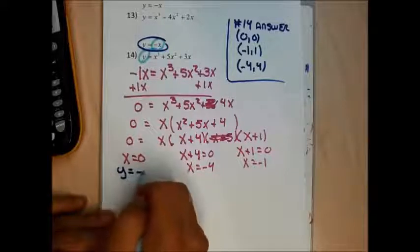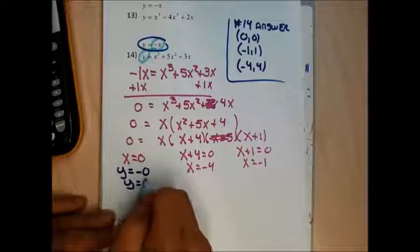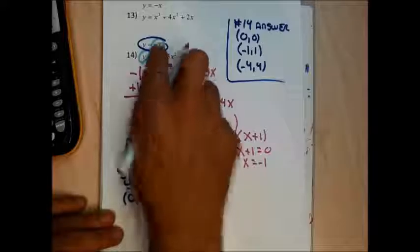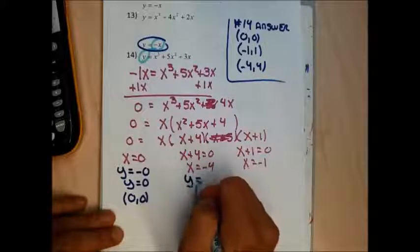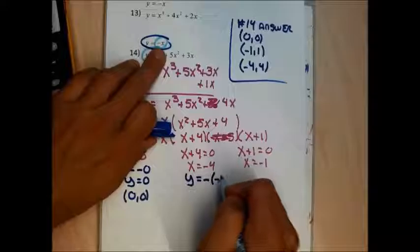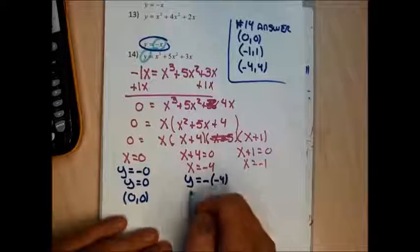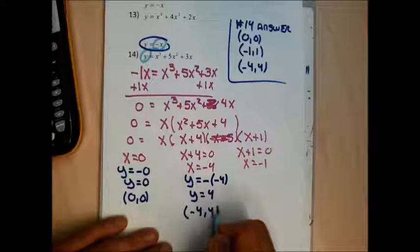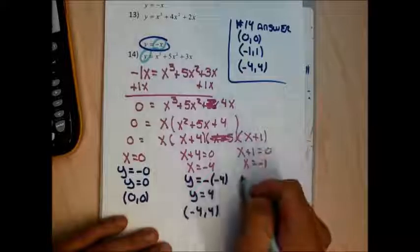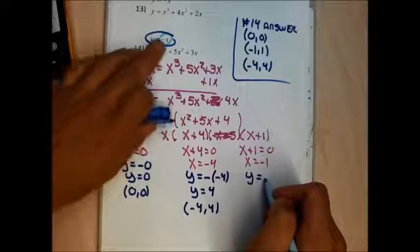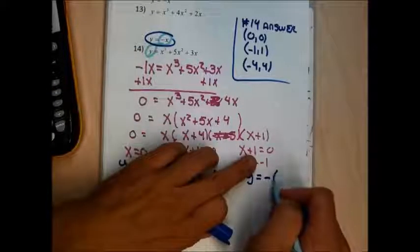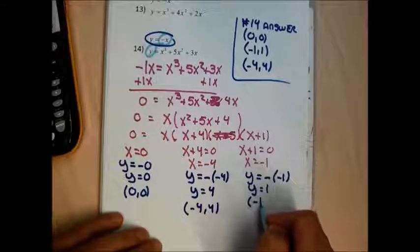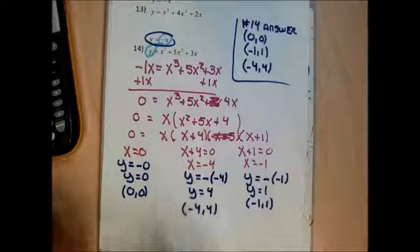Setting each factor to zero: x = 0, x = −4, and x = −1. Using y = −x: when x = 0, y = 0, giving (0, 0). When x = −4, y = 4, giving (−4, 4). When x = −1, y = 1, giving (−1, 1). These match the graphical answers confirmed earlier.